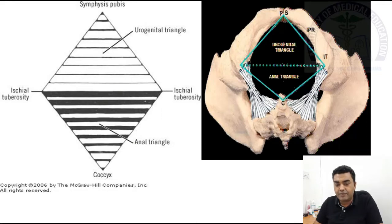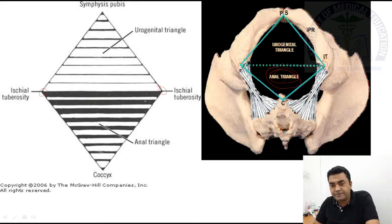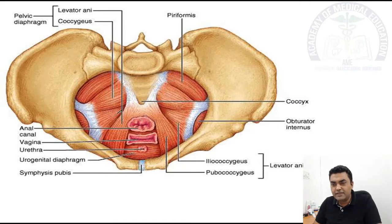The perineum has ischial tuberosities. If you draw imaginary lines between the tuberosities and draw the diagonal, anteriorly there is the urogenital triangle and posteriorly there is the anal triangle. At present we are concerned with the anal triangle structure. Here the pelvic diaphragm is formed by the levator ani muscle and coccygeus muscle.